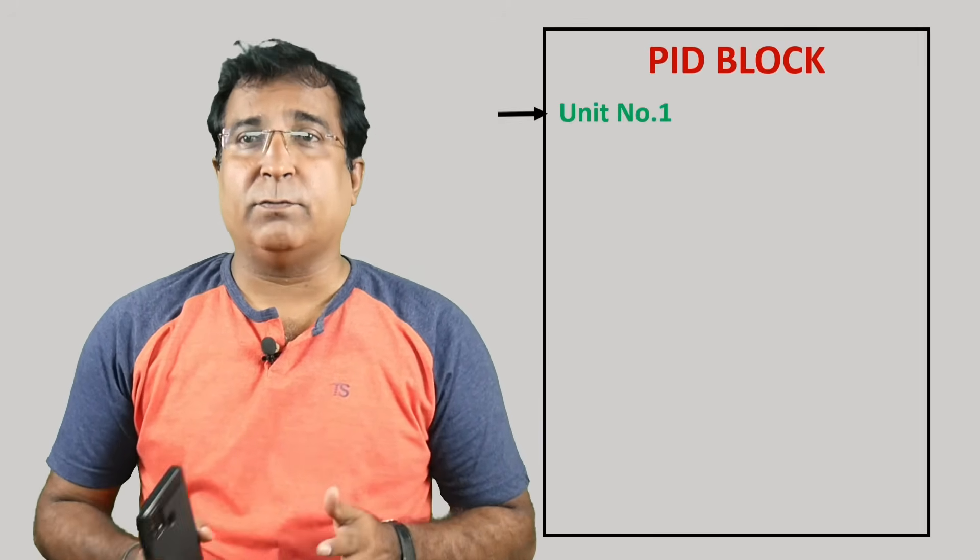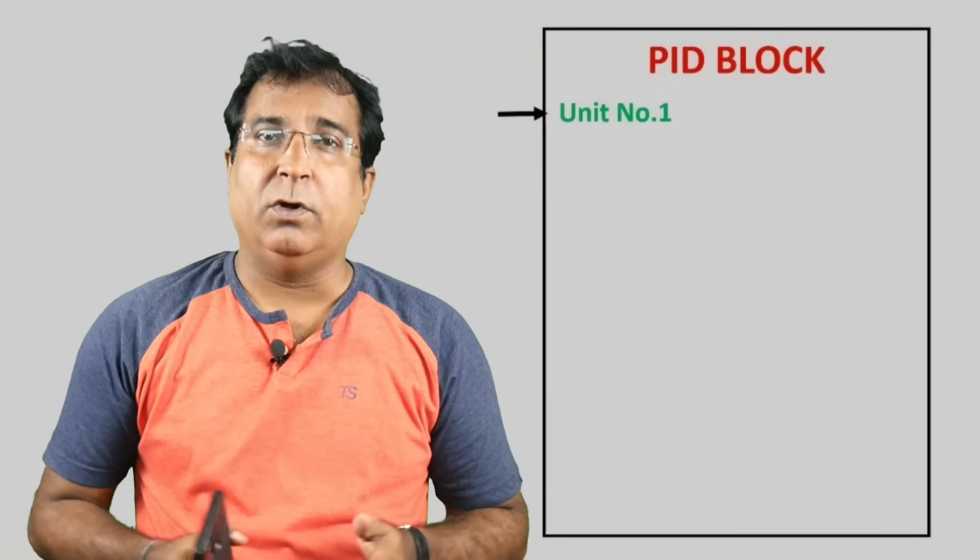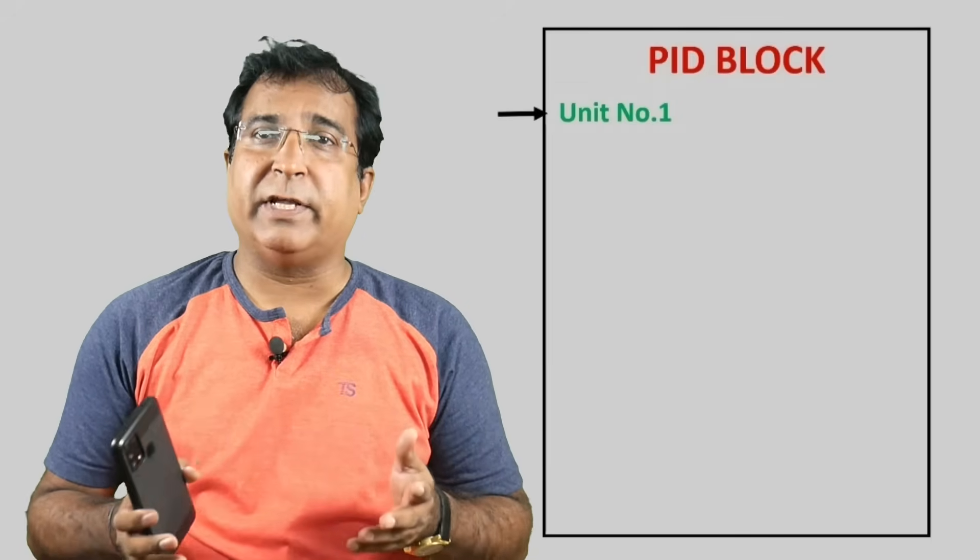First, each function block has a unit number. Maximum limit can be 32, 64, 128 or even more. So whenever you program a new PID controller you need to give a new number.